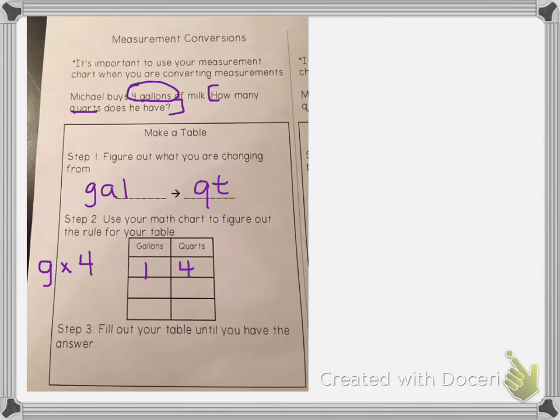So I can keep filling out my table. If I have two gallons, that's going to be eight quarts. Three gallons will be 12 quarts, and I actually need to continue it because I need to get to four gallons. Four gallons would be 16 quarts.